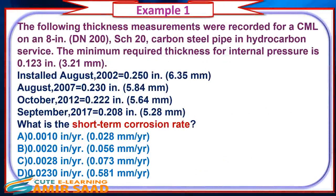Example 1: The following thickness measurements were recorded for a CML on an 8-inch Schedule 20 carbon steel pipe in hydrocarbon service. The minimum required thickness for internal pressure is 0.123 inch. Installed August 2002: 0.250 inch. August 2007: 0.230 inch. October 2012: 0.222 inch. September 2017: 0.208 inch. What is the short-term corrosion rate?